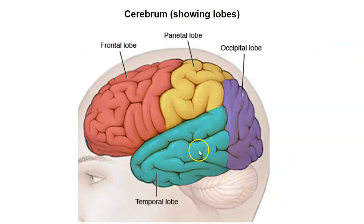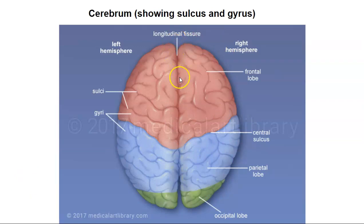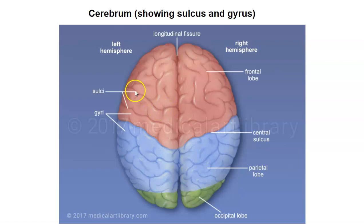Let's look at all those things we just talked about. Here are the four lobes: the frontal lobe, parietal lobe, occipital lobe, and temporal lobe. You'll notice that these lobes correspond identically with the bones of the skull. Here's the longitudinal fissure that separates the left hemisphere and the right hemisphere. These grooves — one of them is a sulcus, and multiple are called sulci. And then the ridges — this would be a gyrus, this would be another gyrus; if you have multiple, you call them gyri.